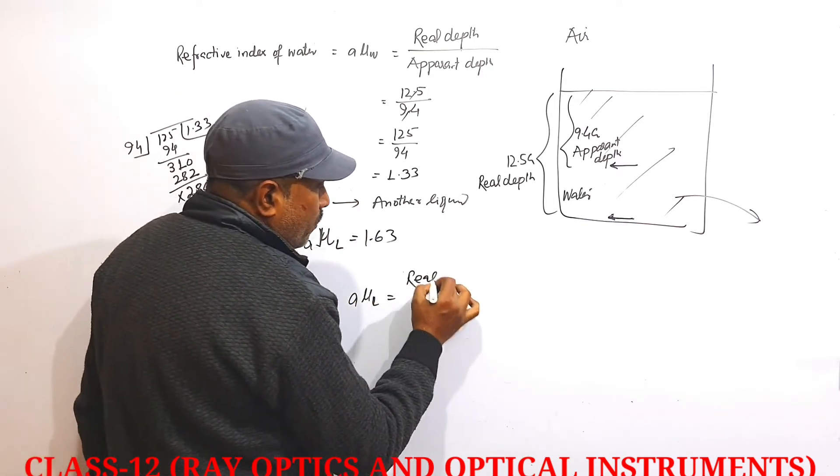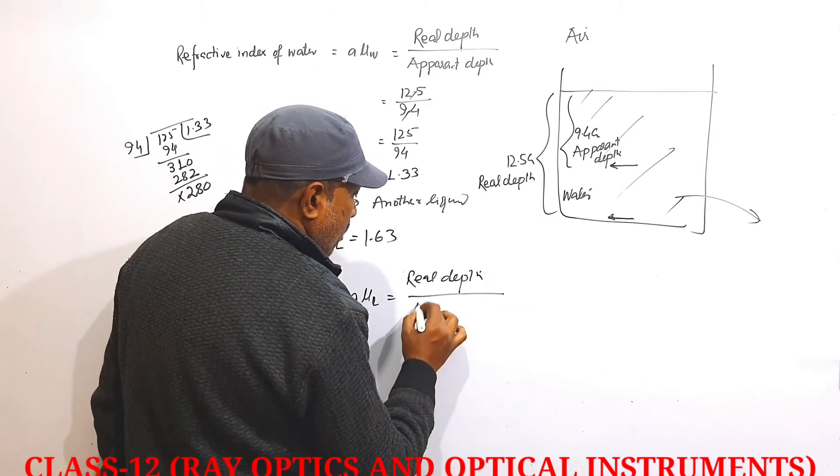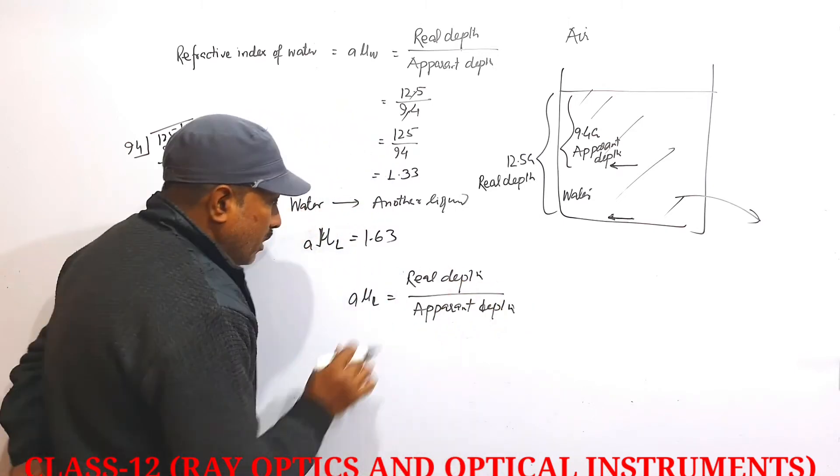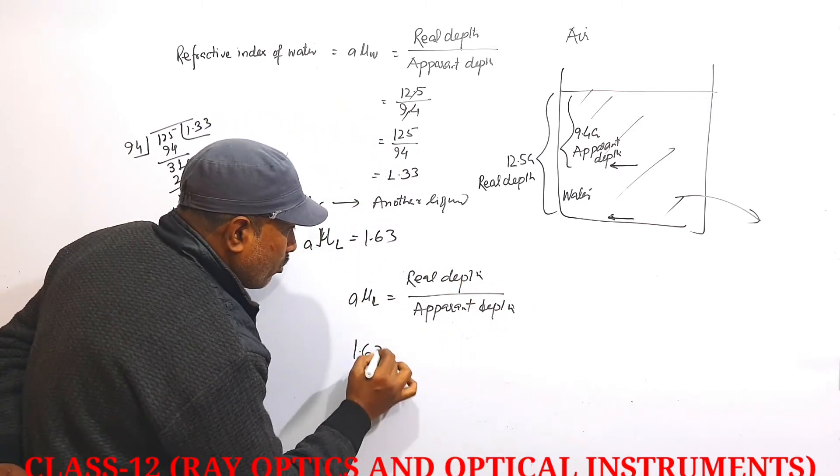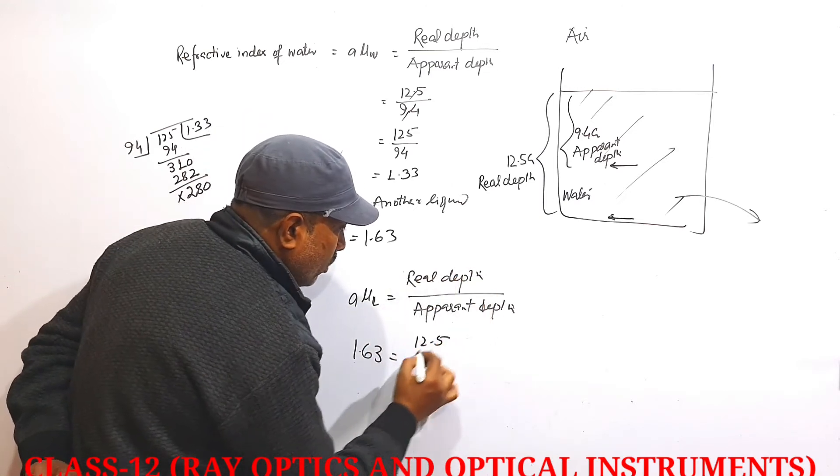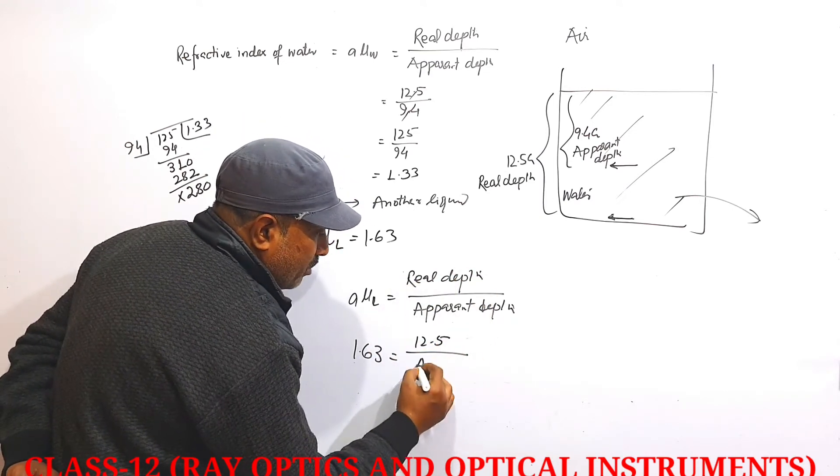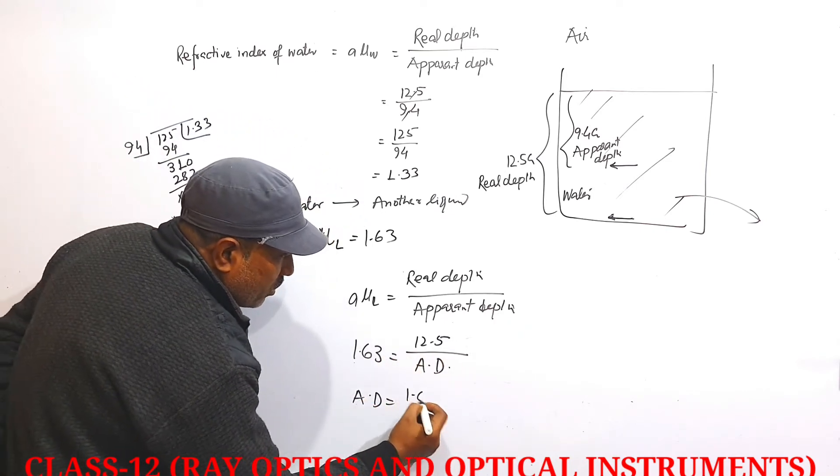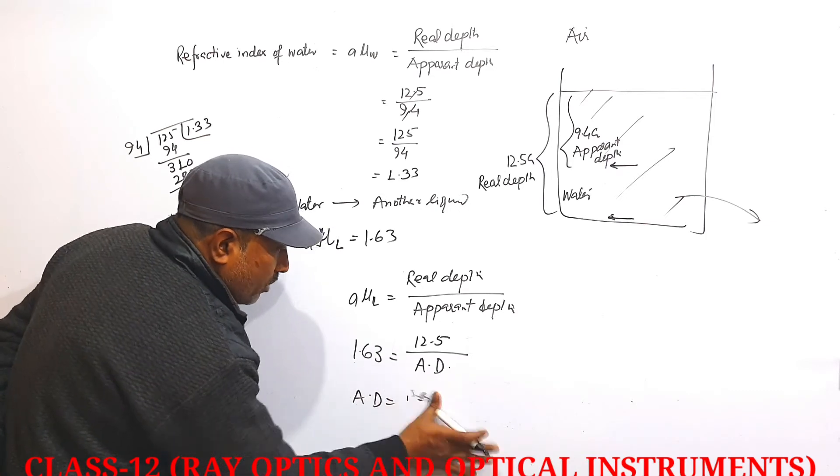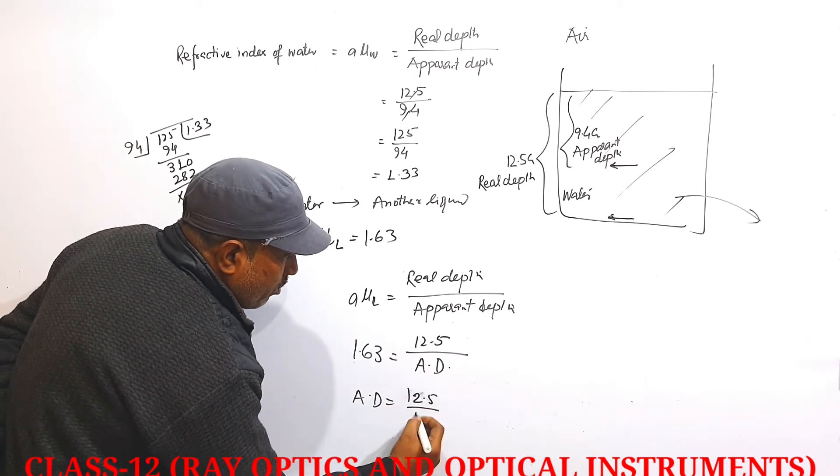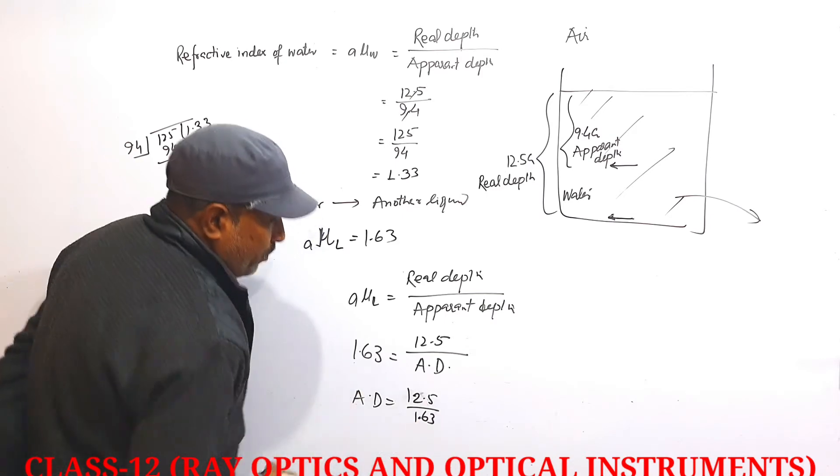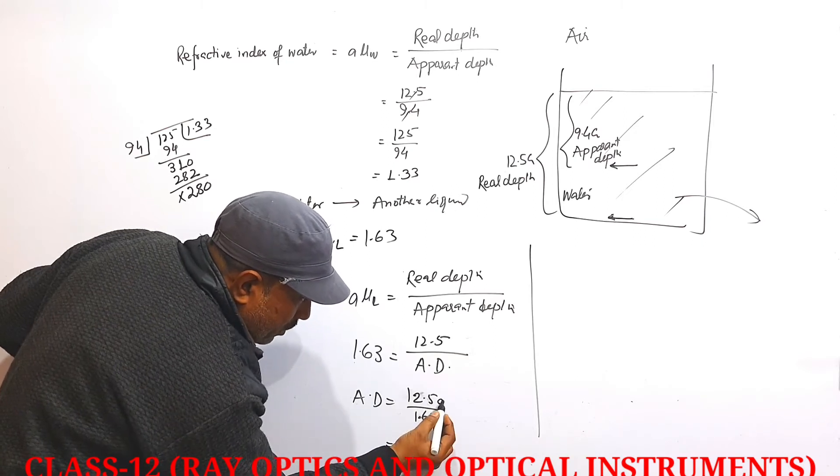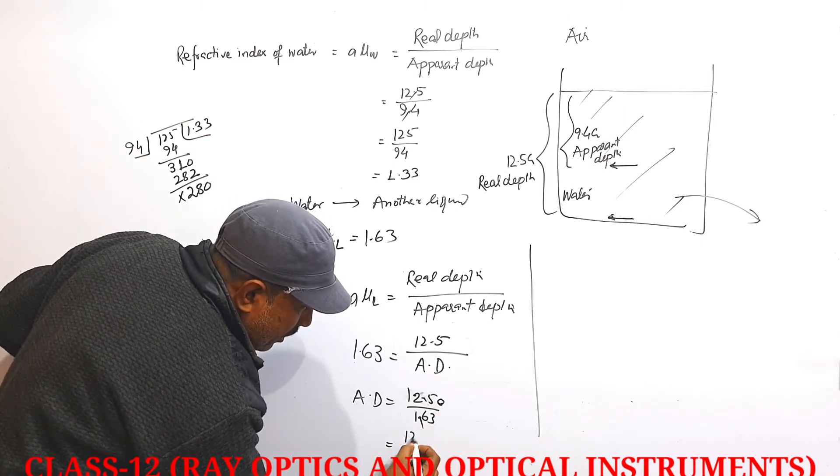We will use the same formula again: real depth over apparent depth. The value here is 1.63. Real depth hasn't changed, but apparent depth we need to find. Apparent depth equals 12.5 divided by 1.63.